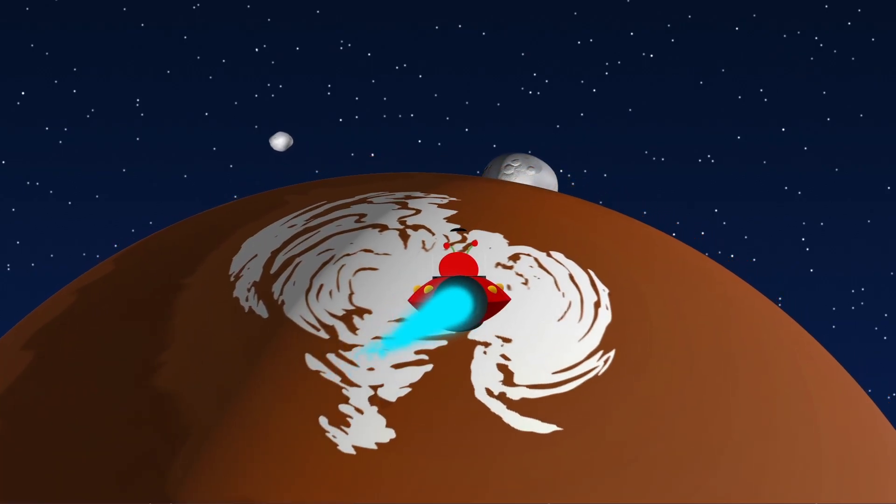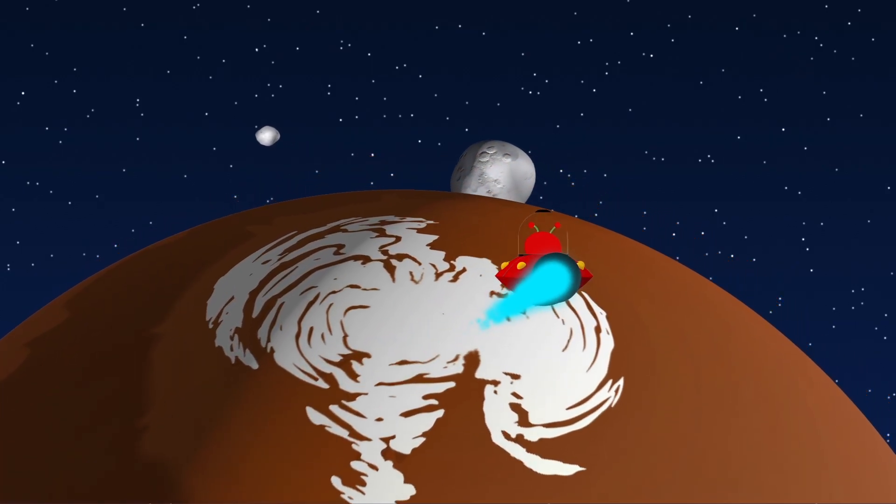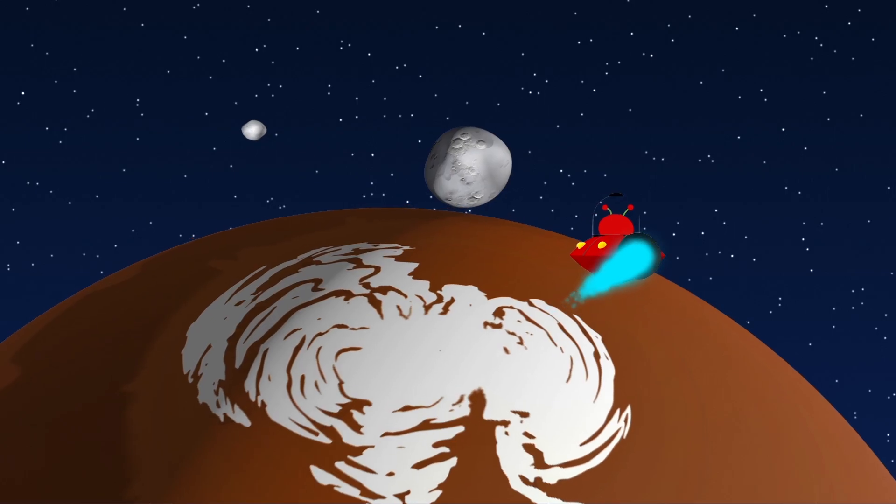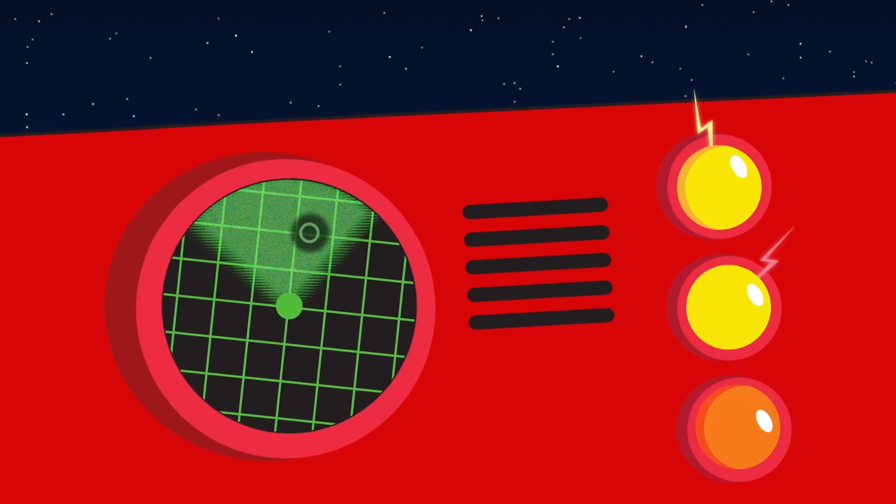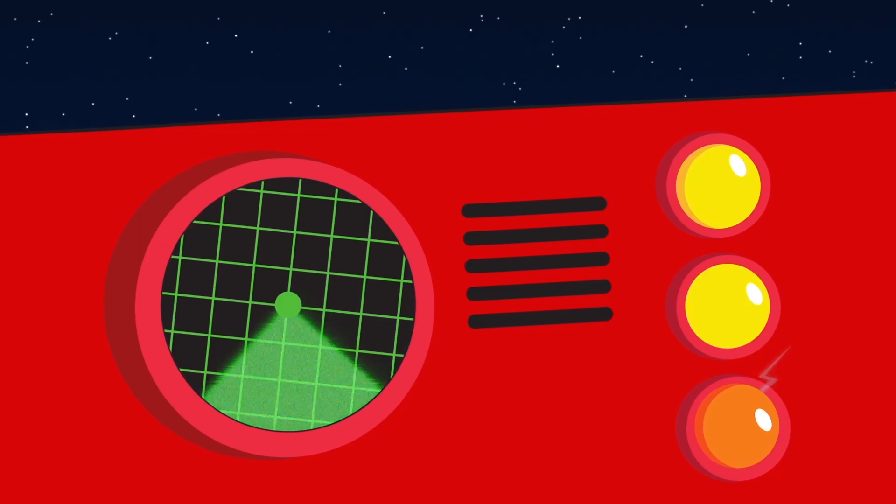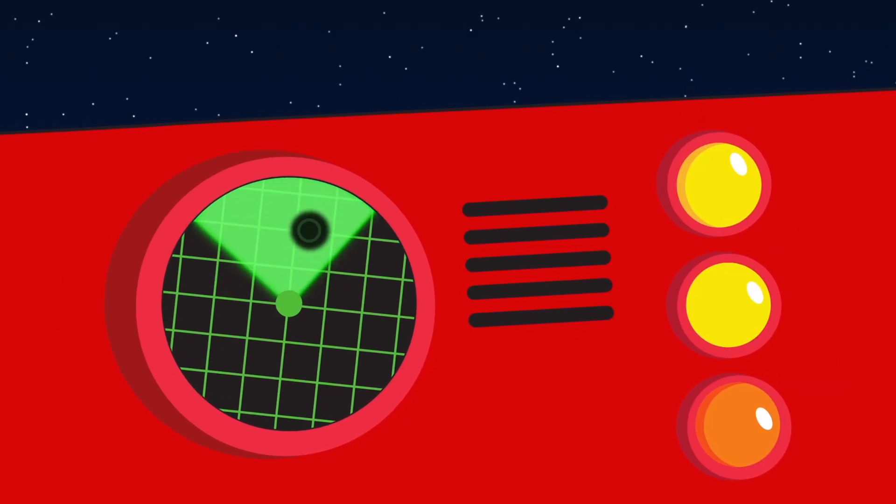There's ice at the poles, and I can even see two small moons. Where could I be? My spaceship is picking up a signal. Maybe someone's trying to say hello. I'm going to find out.